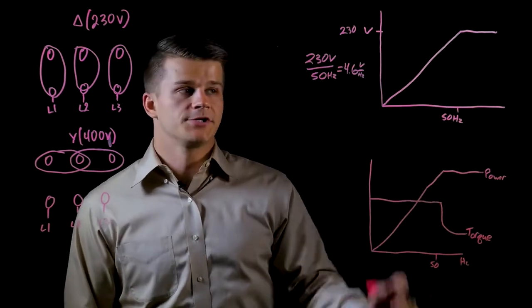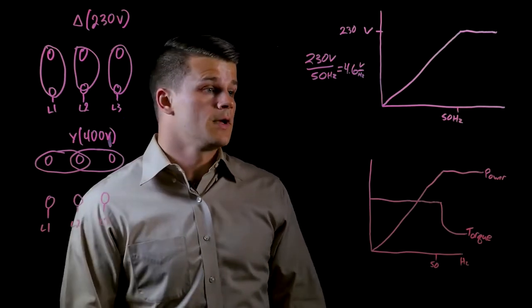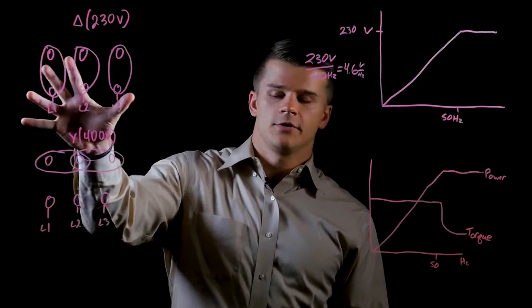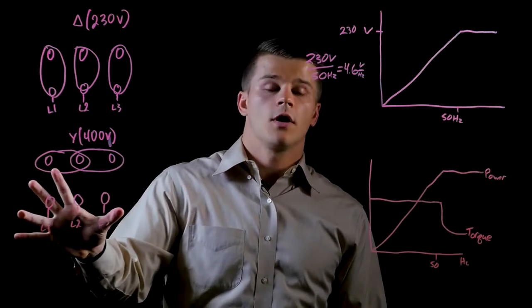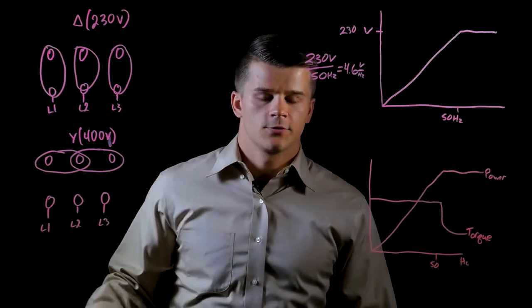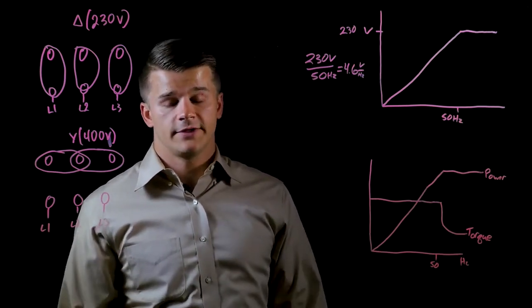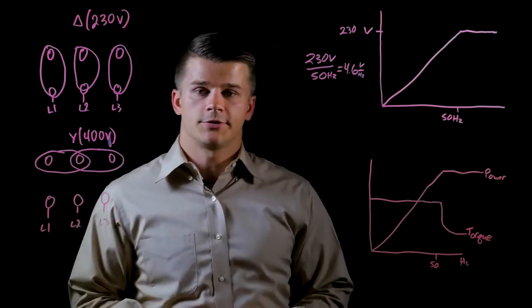That's your standard operation. Now we'll talk about the 87 Hertz trick. Rather than wire it for your 230 volt Delta configuration, you would wire it for the 400 volt Y configuration. The one thing to keep in mind is you would have to have a 400 volt drive in front of it.